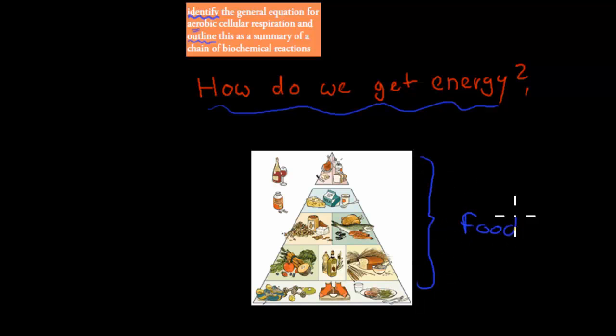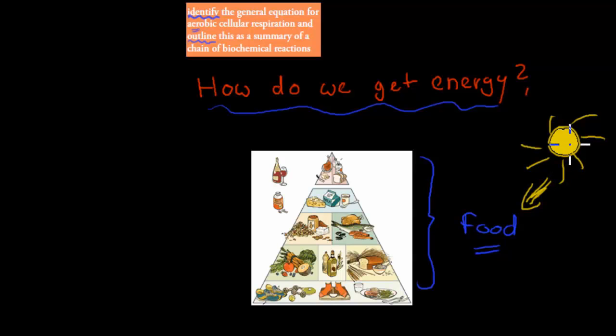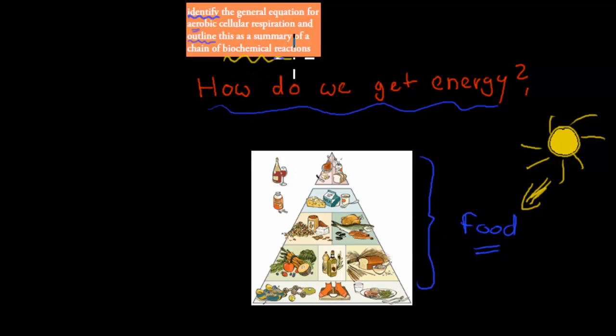Before we start, if I were to ask you how we get energy, you might say we get energy from food. That is fair enough, but you're only half correct. We actually get energy indirectly from food, because we need the sun's energy first to transfer it into food. So we get it from the sun, which is also true, but it's still only half correct — because there are actually a lot of biochemical reactions that help us get that energy from food and make it into energy we can use.